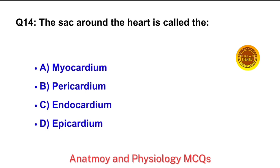Question No. 14. The sac around the heart is called — the right answer is option B: Pericardium.